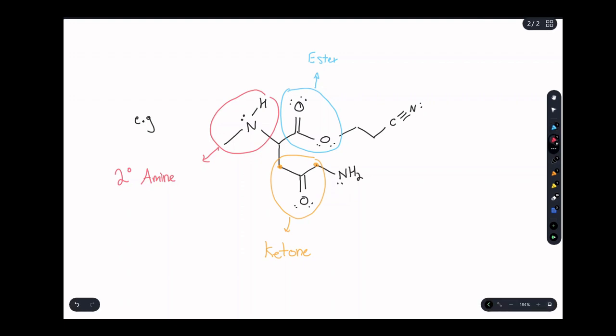Now we have two more functional groups that are important to mention. This here is another amine, but this time it's primary. That amine is only connected, or rather that nitrogen, is only connected to one carbon. Lastly, we see our carbon triple bond to nitrogen, and this is a nitrile.